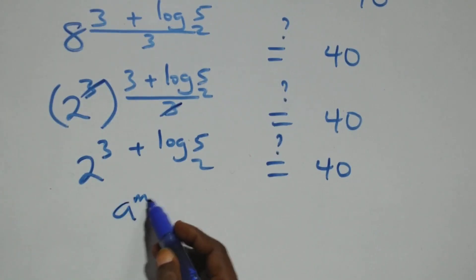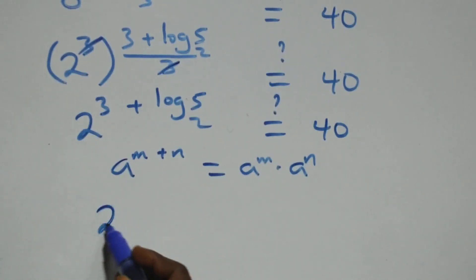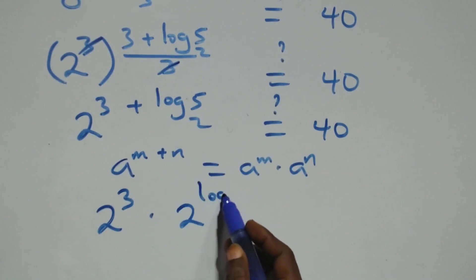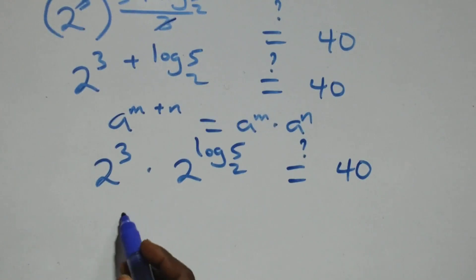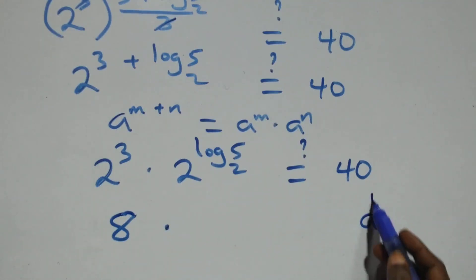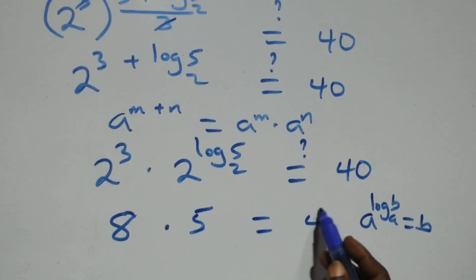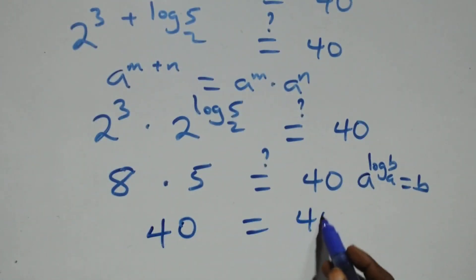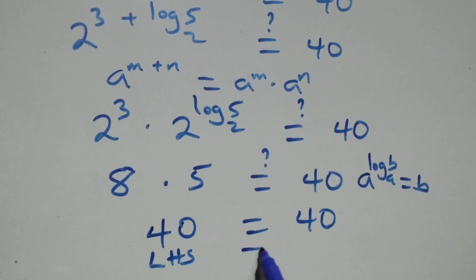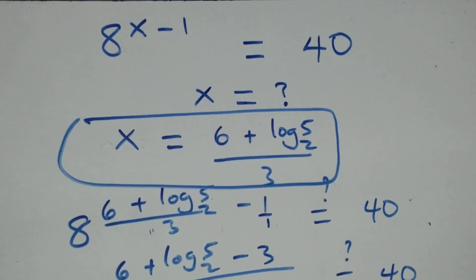Using the rule a raised to power m plus n equals a^m times a^n, we get 2 raised to power 3 times 2 raised to power log₂5. Using the identity a raised to power log base a of b equals b, the term 2 raised to power log₂5 equals 5. So we have 8 times 5, which gives us 40. This equals 40 on the right-hand side — left-hand side equals right-hand side. We conclude that x equals (6 plus log₂5) / 3 satisfies the given problem.